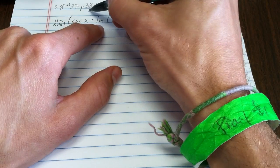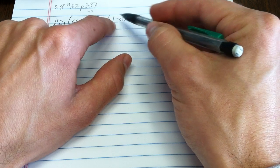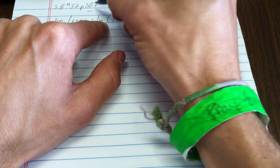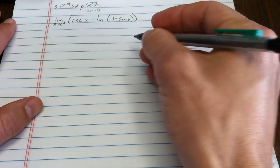What does natural log of 1 minus sine x do? Well, sine x goes to 0, so 1 minus sine x goes to 1. Natural log of 1 is 0, so this is the indeterminate form infinity times 0.